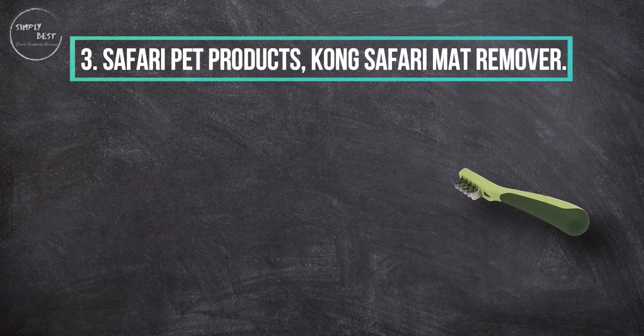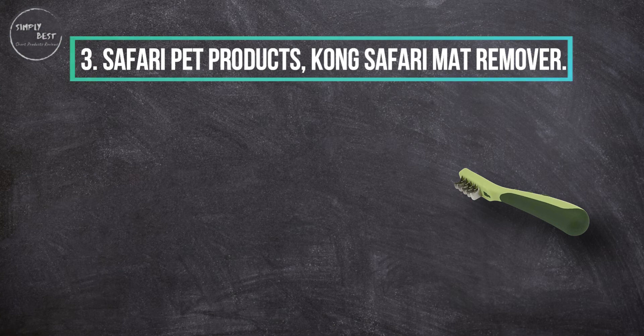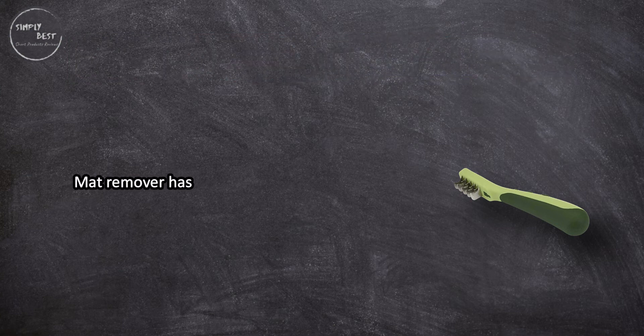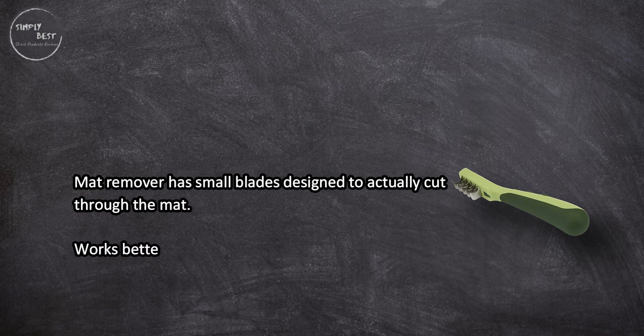At number three: Safari Pet Products KONG Safari Mat Remover. The mat remover has small blades designed to actually cut through the mat.